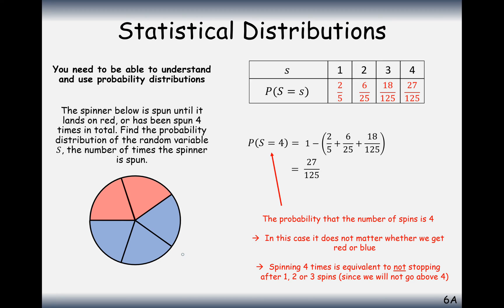Another way to find P(S = 4) would be to work out the individual probabilities of blue-blue-blue-red and add that to the probability of blue-blue-blue-blue. Part of these questions is deciphering what they're asking you to do, so take your time, think about the situation, visualise it, and if it makes sense then start having a go at the question.